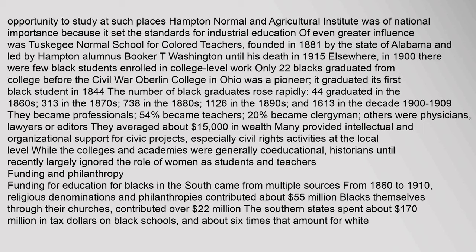In 1900 there were few black students enrolled in college-level work. Only 22 blacks graduated from college before the Civil War; Oberlin College in Ohio, a pioneer, graduated its first black student in 1844. The number of black graduates rose rapidly: 44 in the 1860s, 313 in the 1870s, 738 in the 1880s, 1,126 in the 1890s, and 1,613 in 1900–1909. They became professionals: 54 percent became teachers, 20 percent became clergymen, and others were physicians, lawyers, or editors. They averaged about $15,000 in wealth and many provided intellectual and organizational support for civic projects, especially civil rights activities.